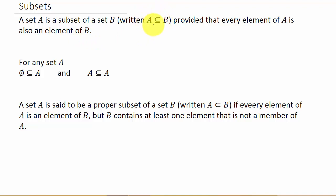And this is the notation we use to represent a subset. So in other words, what they're saying here is if A is equal to the set 1, 2, and B is the set 1, 2, 3, 4, then we can say that A is a subset of B, because every element of A is also an element of B.